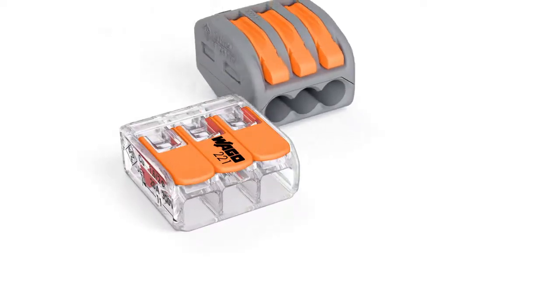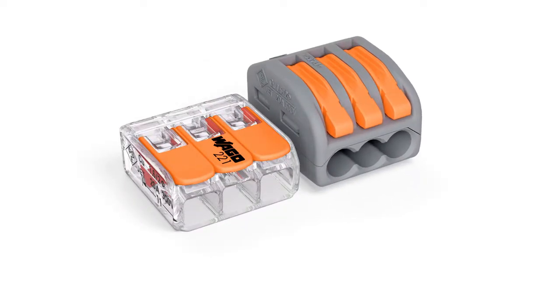Wago's 221 series compact splicing connector for all conductor types saves 40% more space than its predecessor thanks to a significant reduction in size.